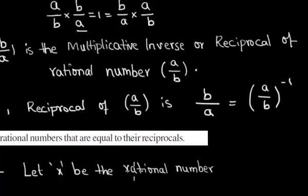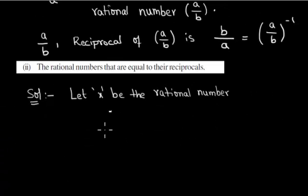Let us find the solution of the given problem. We have to find out the rational numbers that are equal to their reciprocals. Let x be the rational number.